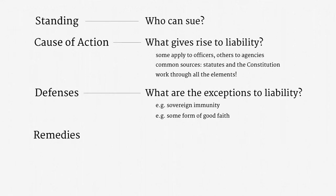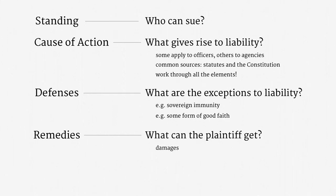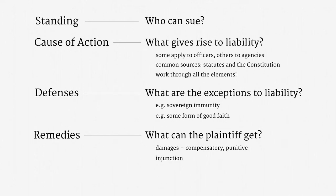Remedies are the end goals of a civil claim — what the plaintiff can get. One common remedy is money, called damages in law speak. Ordinarily, damages are used to compensate a plaintiff; those are called compensatory or actual damages. Sometimes bonus damages are available to punish egregious misconduct — those are called punitive damages. Another frequent remedy, and one particularly important in surveillance, is an injunction: a binding court order to either do something or to stop doing something.